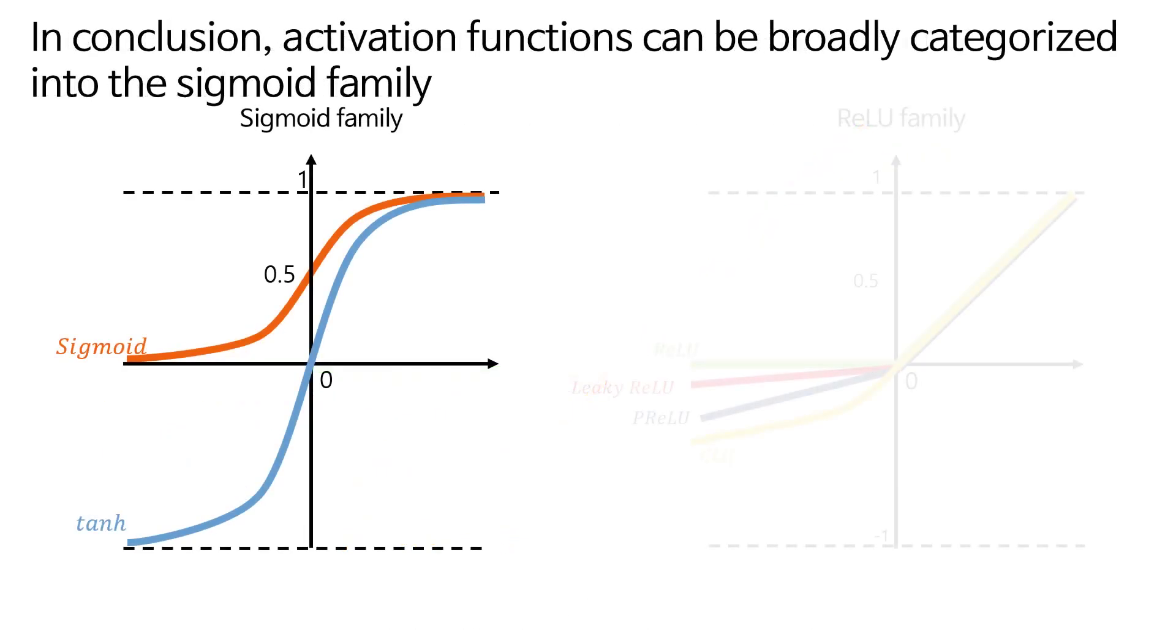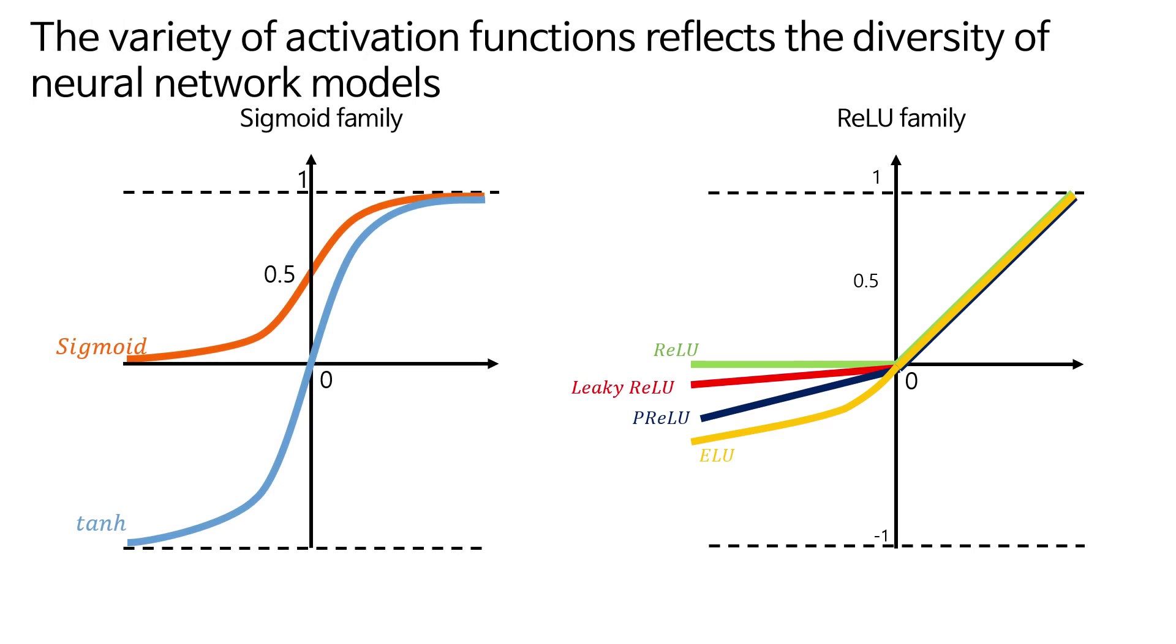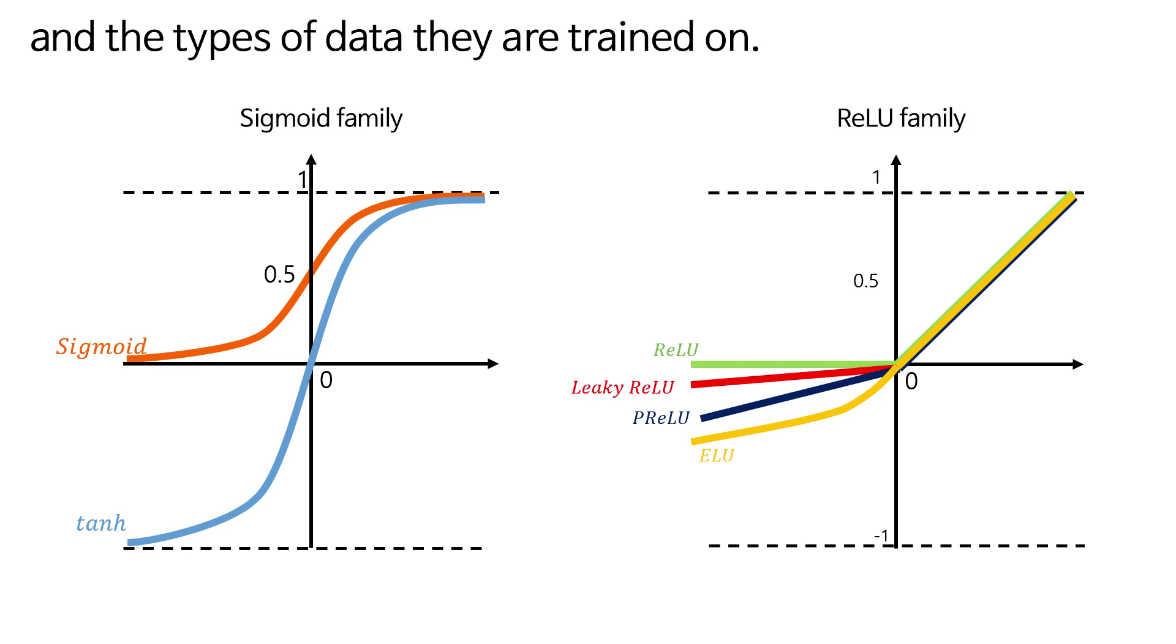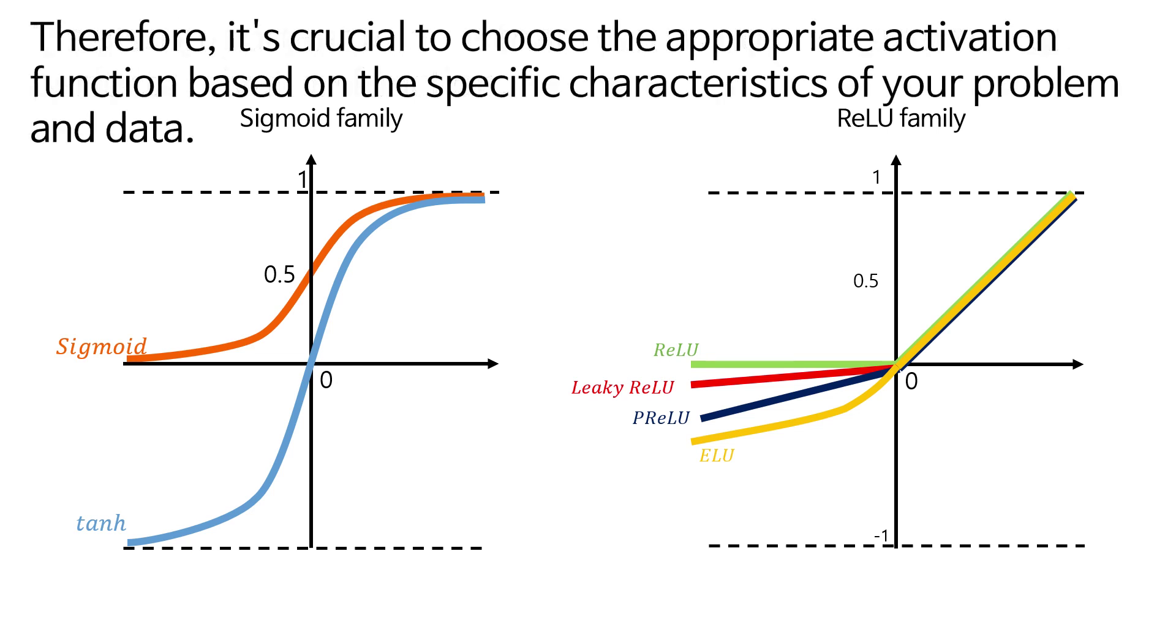In conclusion, activation functions can be broadly categorized into the sigmoid family and the RELU family. The variety of activation functions reflects the diversity of neural network models and the types of data they are trained on. It's also important to note that there is no one-size-fits-all perfect activation function. Therefore, it's crucial to choose the appropriate activation function based on the specific characteristics of your problem and data.